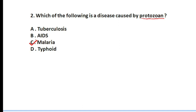Now, tuberculosis is caused by mycobacterium tuberculosis — it is a bacterial disease. Option B involves a virus, specifically HIV. Malaria is caused by plasmodium.